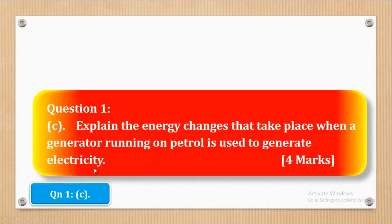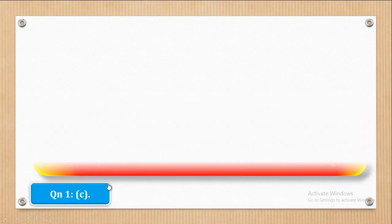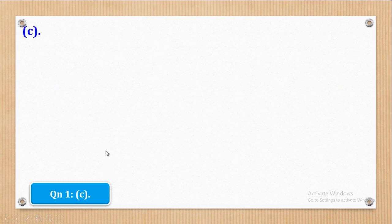Now we go to part C. Part C says: explain the energy changes that take place when a generator running on petrol is used to generate electricity. That is four marks. Let's see how those four marks can be obtained.